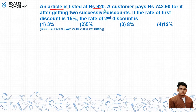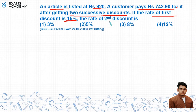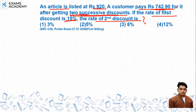The question is: an article is listed at ₹920. A customer pays ₹742.90 for it after getting two successive discounts. The first discount is 15 percent. We are given the list price is 920 rupees and the customer gets it for 742.90 rupees after two successive discounts. We need to find the second discount.